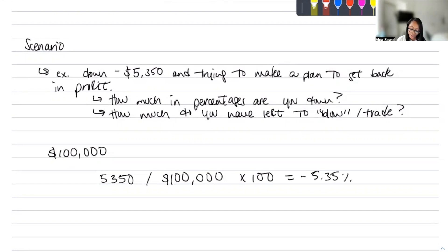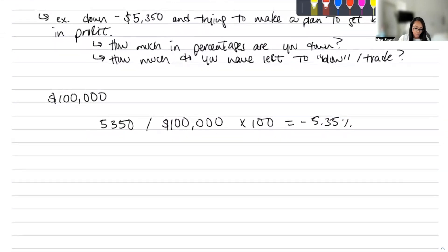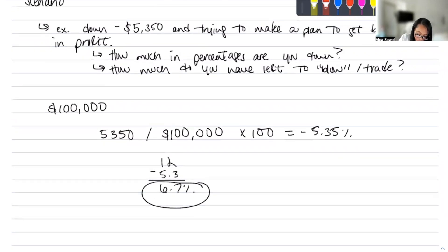How much do you have left to blow or to trade? That's simple subtraction. So let's say we're dealing with a prop firm that you have max 12% of drawdown before you blow the account challenge. That's a simple 12 minus 5.35. I'm just going to do 5.3, which is 6.7%. So in this account, I have remaining 6.7% that I can use to pass this challenge or to get a repeat account. Or I have 6.7% left before I blow the account.